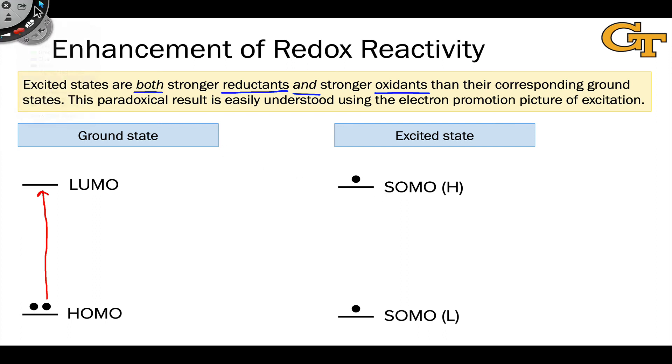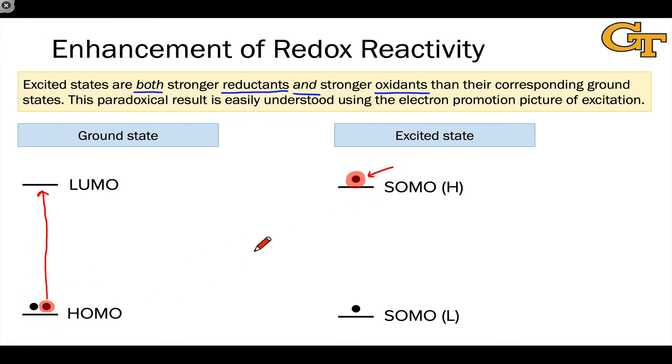Let's think about each electron in turn, starting with the SOMO-H. This is a high-energy electron—much higher in energy than when it was occupying the HOMO in the ground state. The elevation in energy of this electron means that, relative to its reactivity in the ground state, this electron is easily donated. It's easily given away.